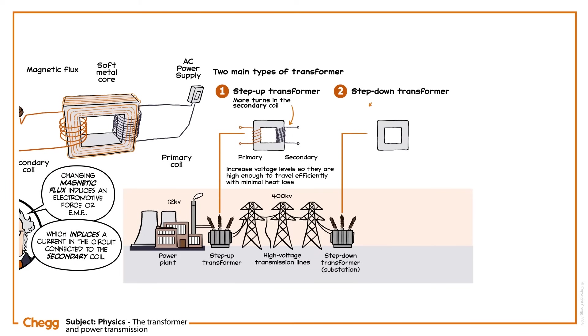Step-down transformers have more turns in their primary coil, resulting in a lower voltage in the secondary coil. They reduce the voltage back down to safer levels before electricity enters your home.